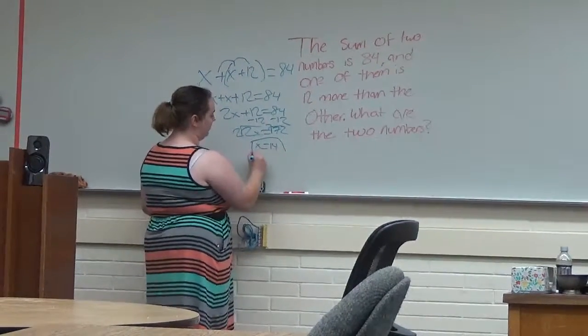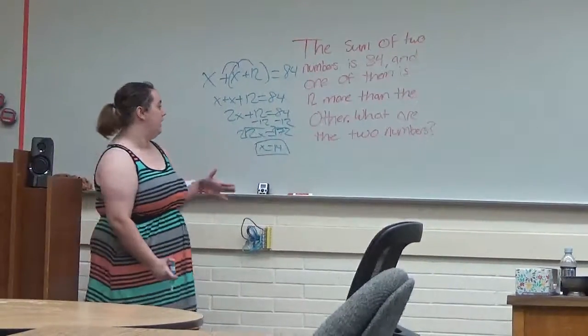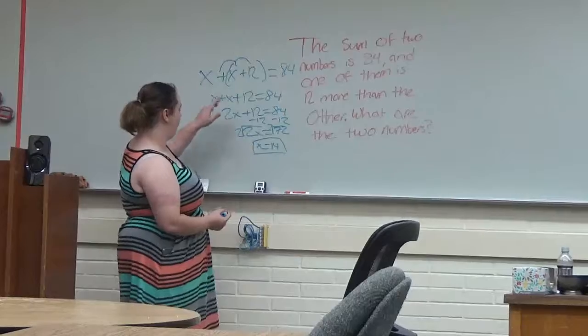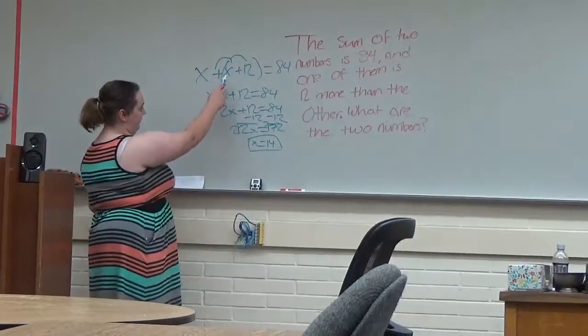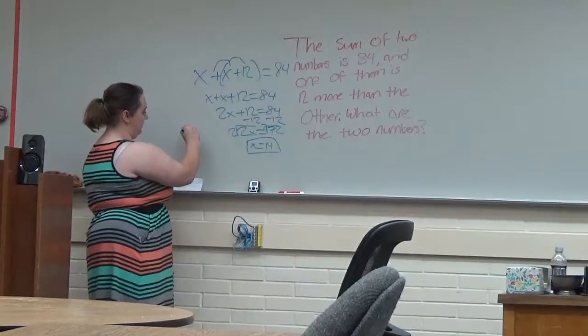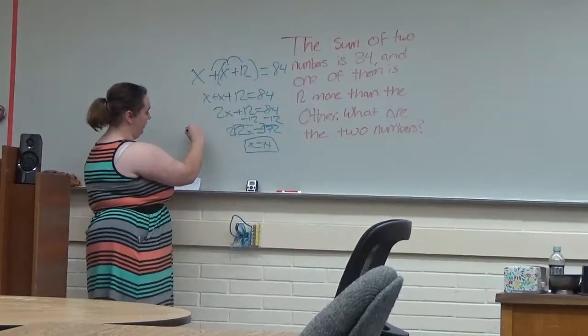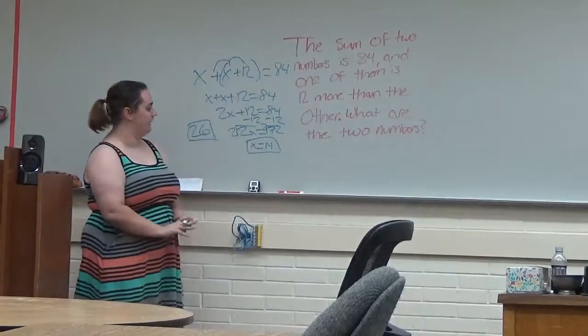So one of the numbers is 36. That's what that tells you. And how you find the second number is you take, you plug 36 back into this equation. So then you would be 36 plus 12, which is 48. So your two numbers are 36 and 48.